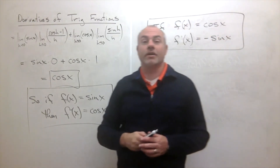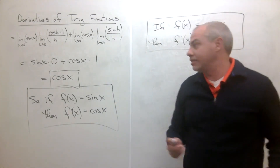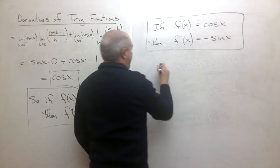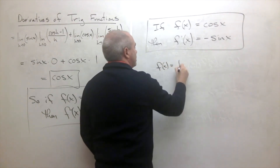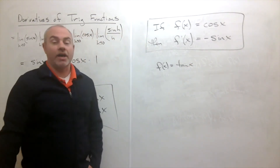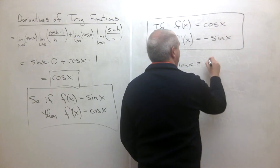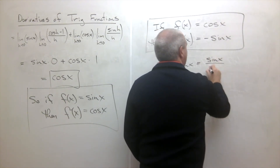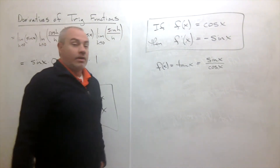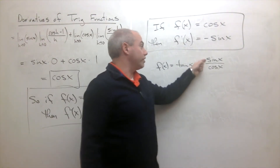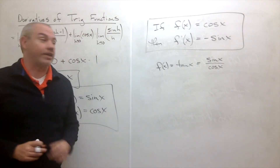Now let's think about the derivative of our third trigonometric function: tangent. Let f of x equal tangent of x. It's helpful to remember that tangent of x is sine of x over cosine of x, which is a quotient of two functions whose derivatives we know — so we can use the quotient rule.